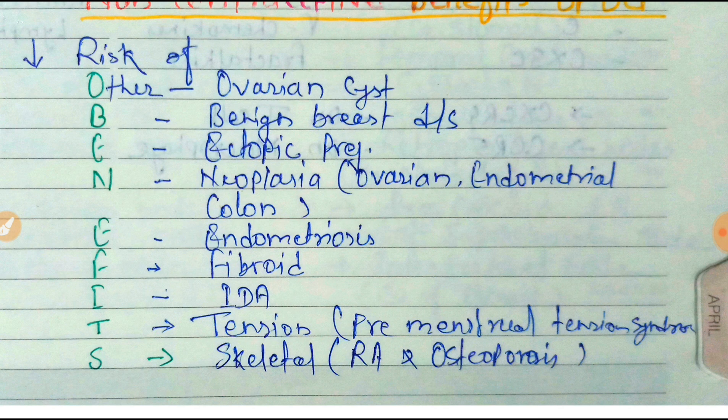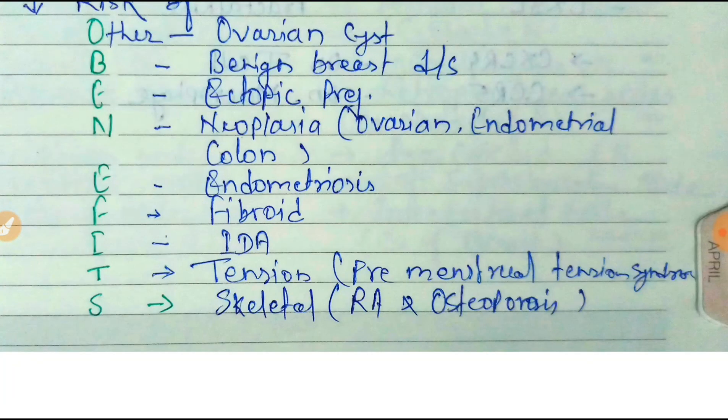Neoplasia means ovarian, endometrial, and colon cancers. E is for endometriosis, F for fibroid, I for iron deficiency anemia, T for tension — that means premenstrual tension syndrome — and S for skeletal, meaning rheumatoid arthritis and osteoporosis. This is frequently asked in NEET PG.